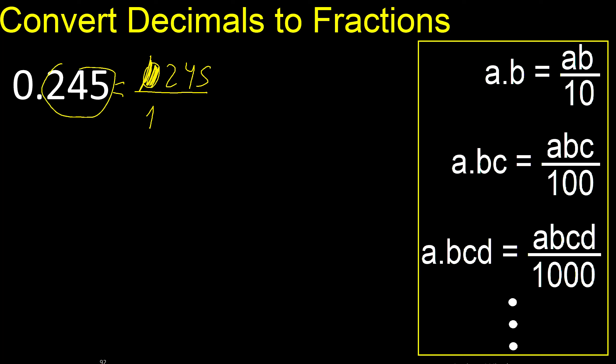After the point there are three numbers, therefore three zeros: one, two, three. Can be simplified because it can be divided by the same number, divided by five.